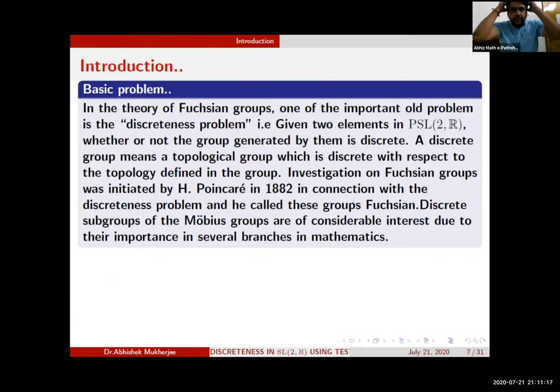The talk is based on this basic problem in the theory of Fuchsian groups. The basic problem is discreteness, which means that given any two elements in PSL(2,R), whether or not the group generated by them is discrete. A discrete group means a topological group which is discrete with respect to the topology defined in the group.